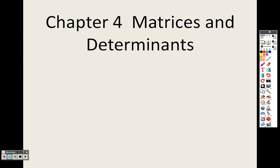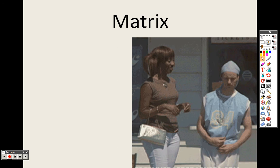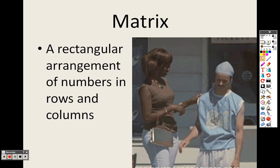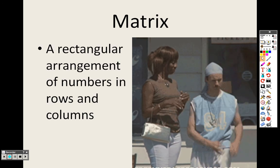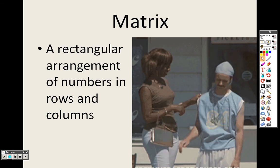Alright, so chapter 4, matrices and determinants. We're going to start with basic matrix operations in 4.1. That's basically what we are on right now. A matrix is basically a rectangular arrangement of numbers in rows and columns.